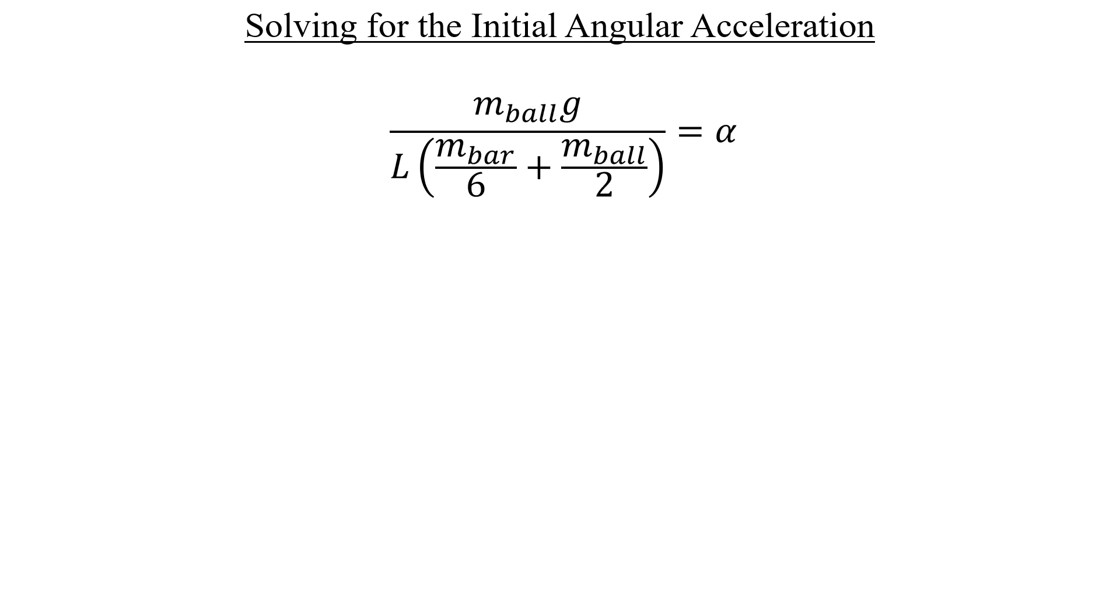From here, I'm going to factor out the ratio of g divided by L. The other ratio containing the masses doesn't look very nice at the moment, since we have a sum of unlike fractions buried inside the denominator of another fraction. The whole thing is just kind of a mess.